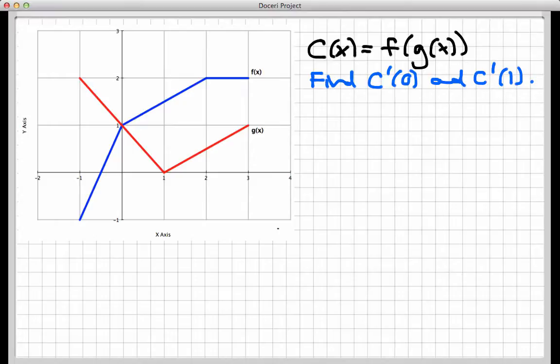So here I have two functions, f and g. F is the blue one, g is the red one, and they're both sort of piecewise linear. They're just made up of line segments jointed together at these strange angles, and I'm going to define c(x) to be the composite f(g(x)). And what I would like to do is find the derivative of c at 0 and the derivative of c at 1.